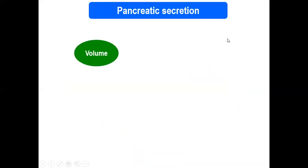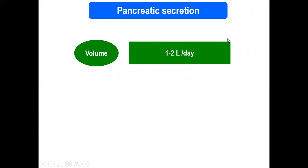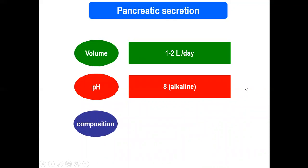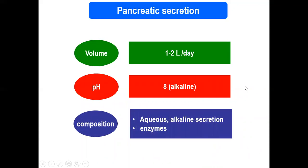Looking at pancreatic secretion: the volume is 1.1–2 liters per day. The pH is the highest — pH 8 — making it the most alkaline secretion in the body. As mentioned, the most acidic secretion is from the stomach, and the most alkaline is the pancreatic secretion. The composition includes an aqueous alkaline secretion and enzymes.